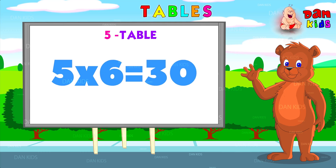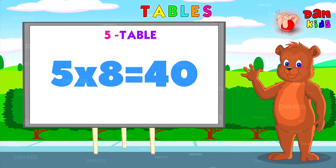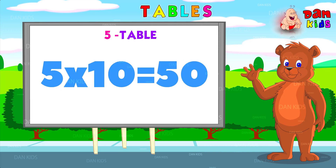Five sixes is thirty. Five sevens is thirty-five. Five eights is forty. Five nines is forty-five. Five tens is fifty.